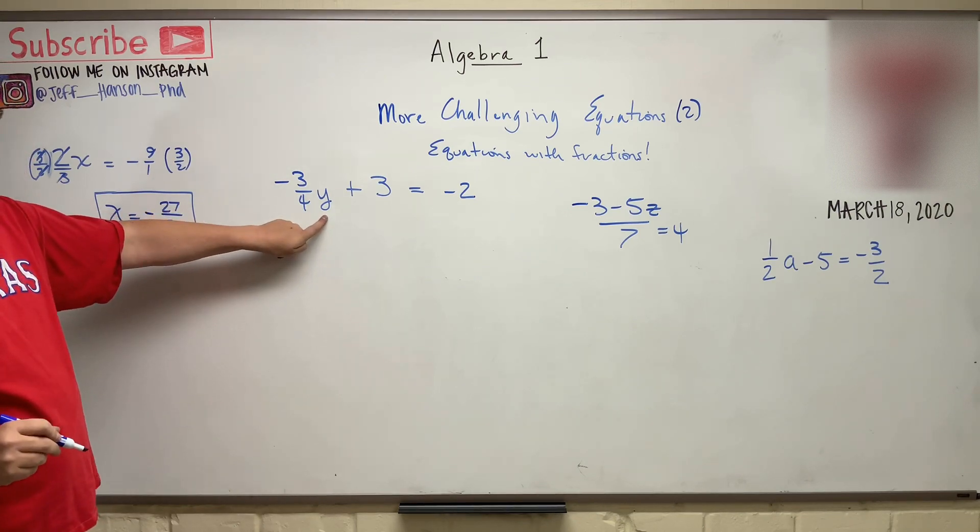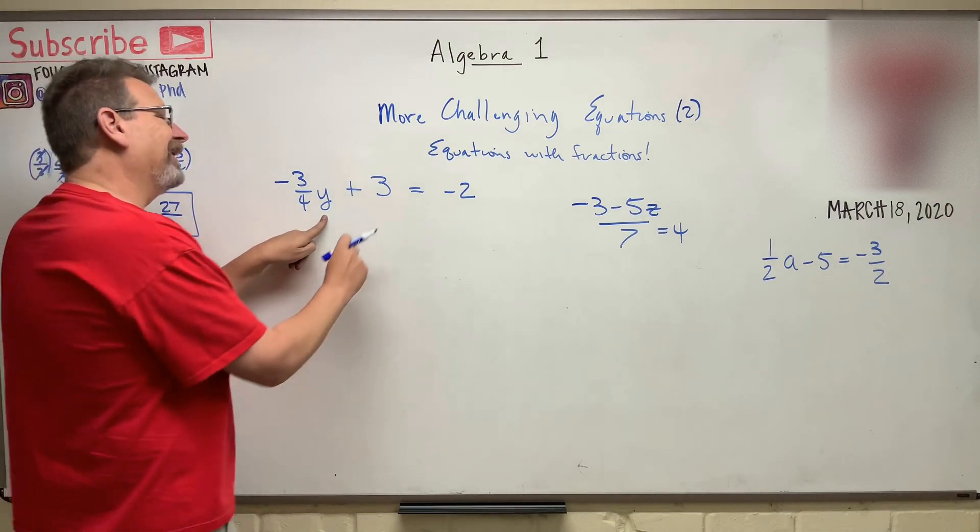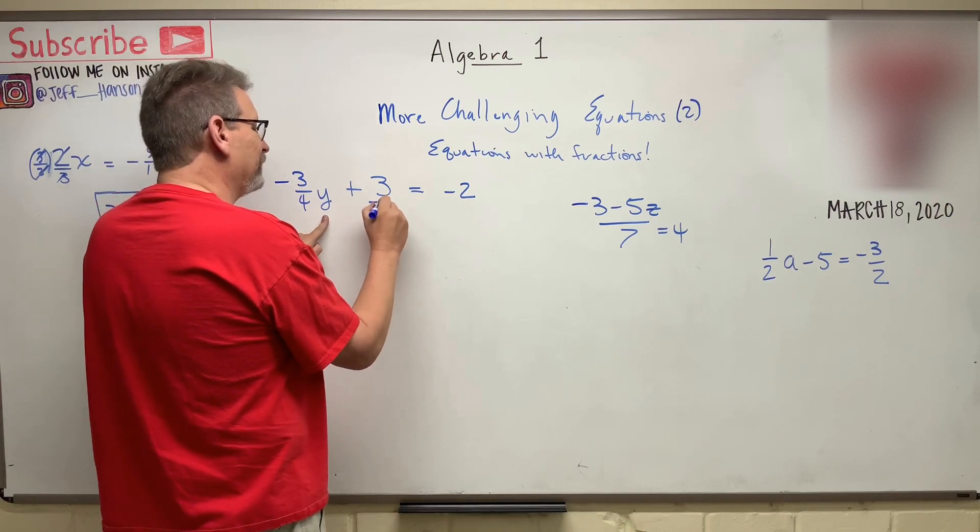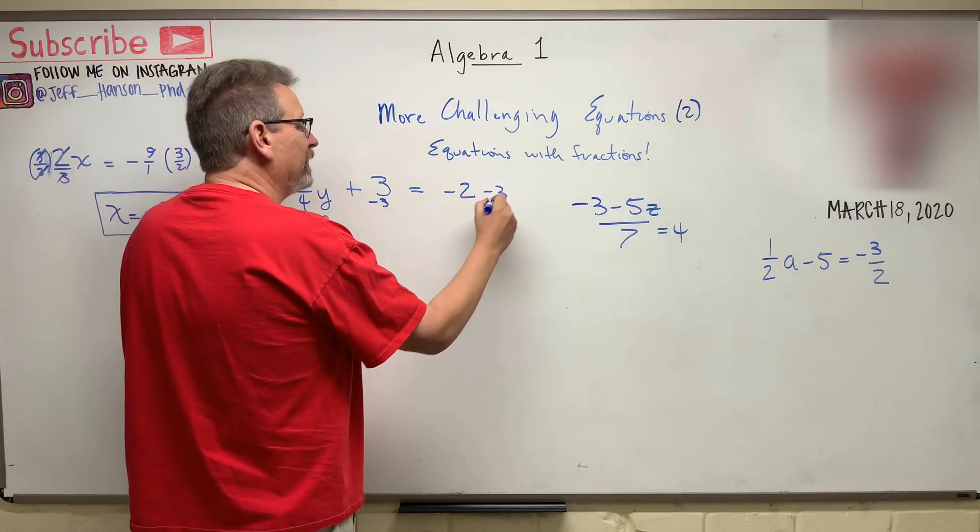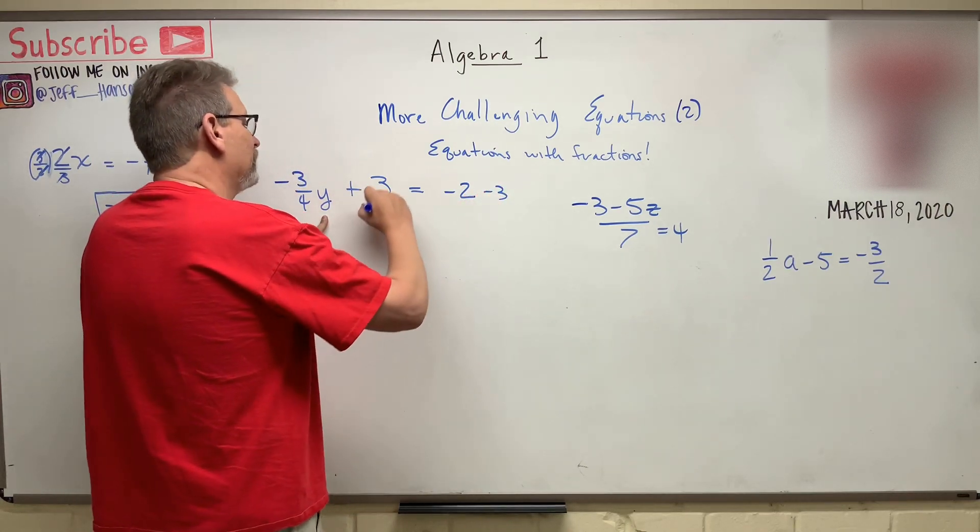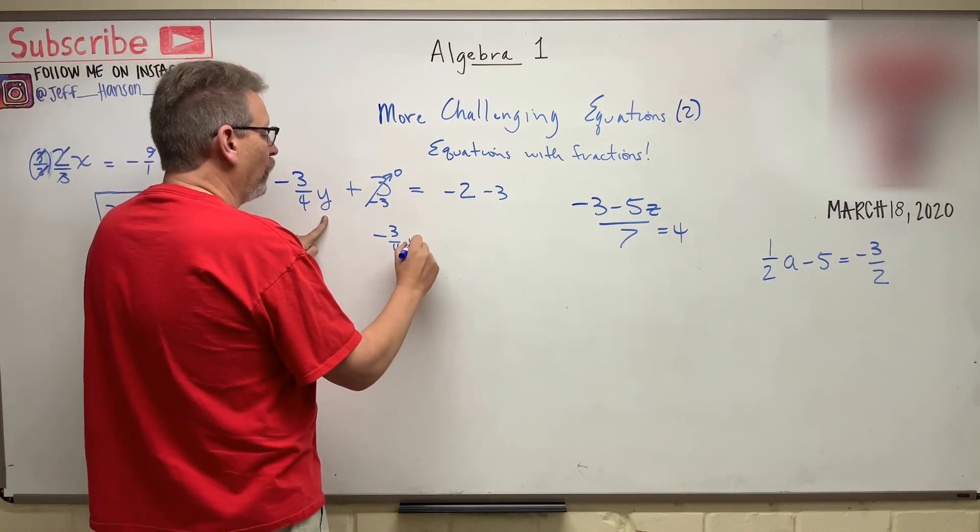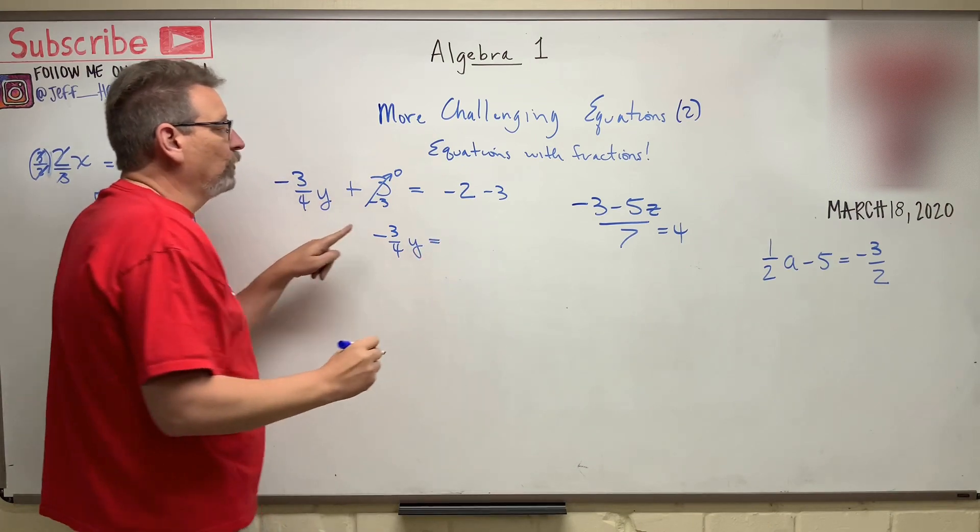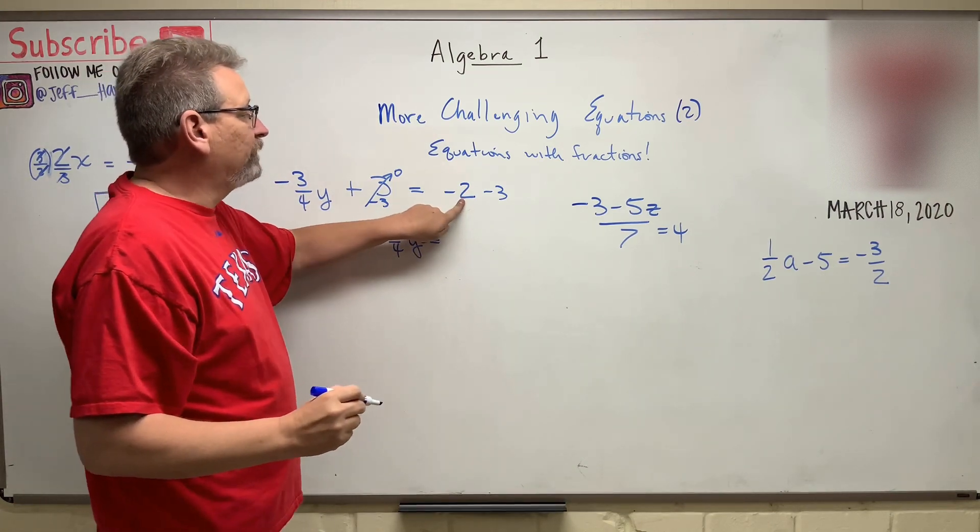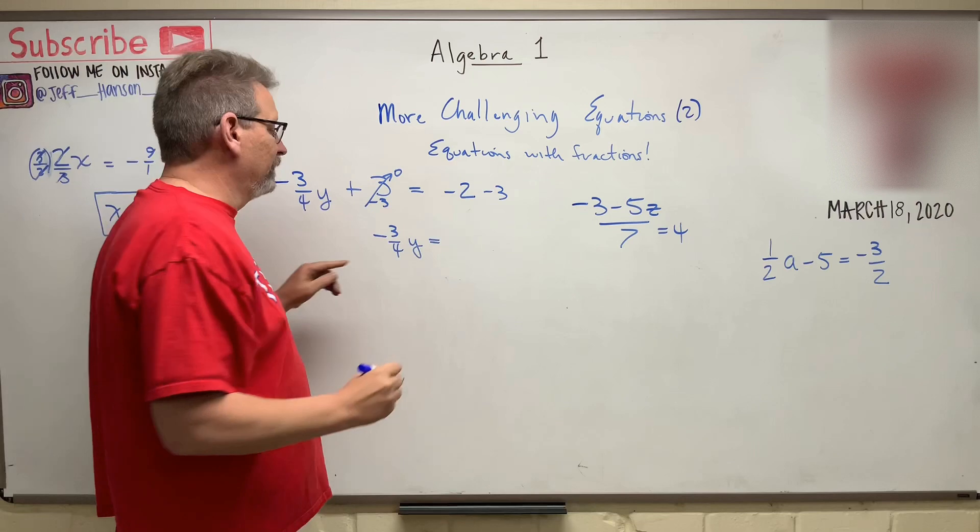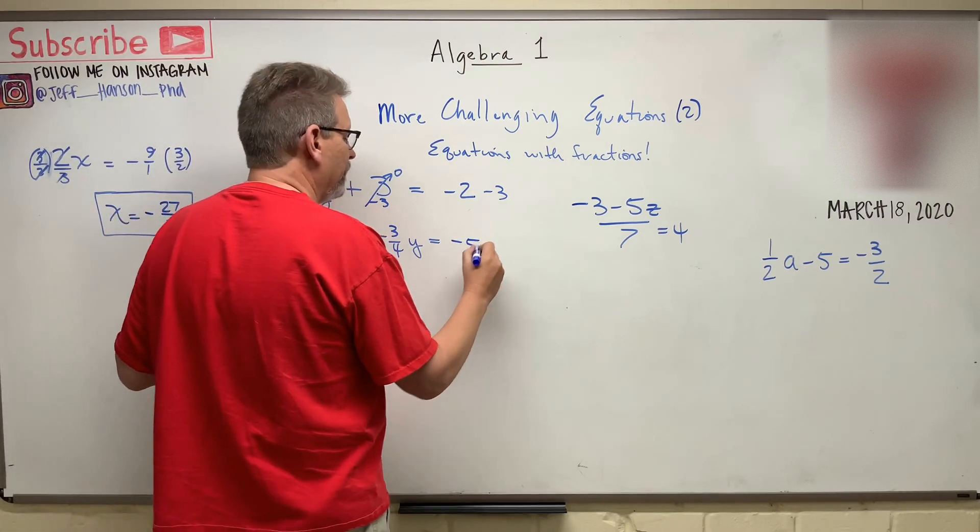Over here, we've got to get y all by himself. So step one, let's get rid of that three, so minus three on this side, minus three on that side. So that guy goes to zero, so this becomes negative three-fourths y is equal to negative two plus negative three is negative five.